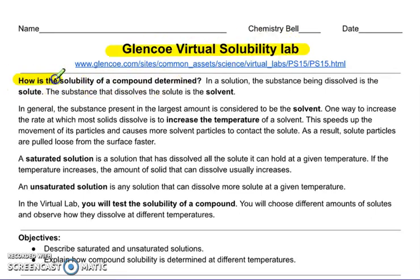We're going to be investigating how is the solubility of a compound determined. In a solution, the substance being dissolved is the solute. The substance that dissolves the solute is the solvent. In general, the substance present in the largest amount is considered to be the solvent. Usually it's going to be water for us in level 1 chemistry.